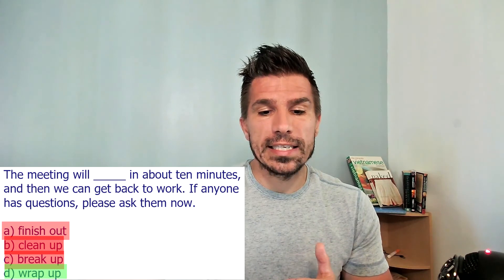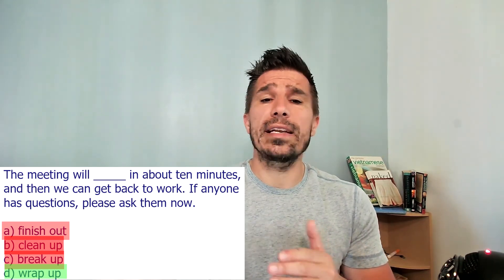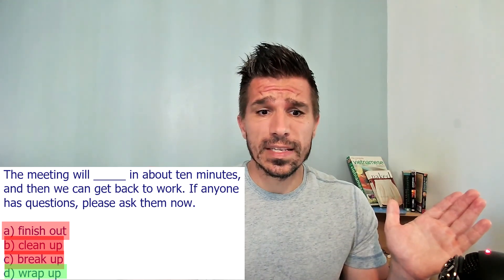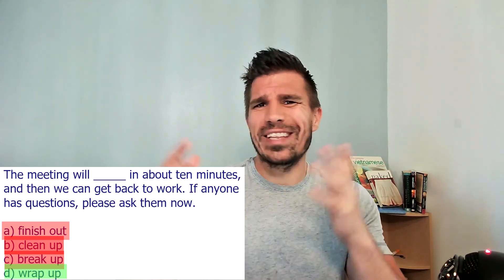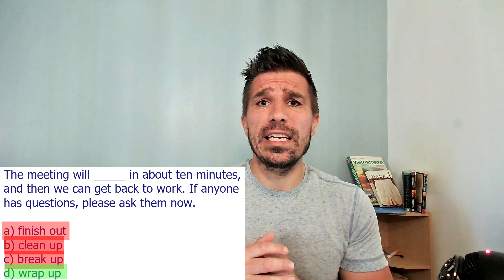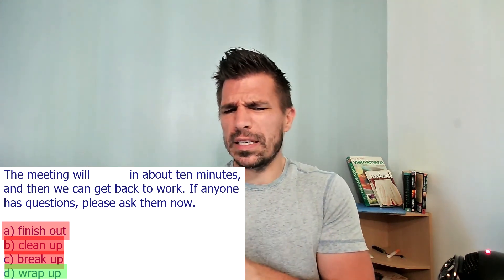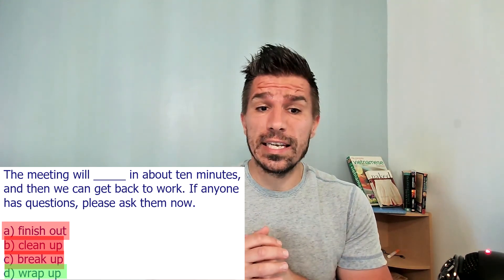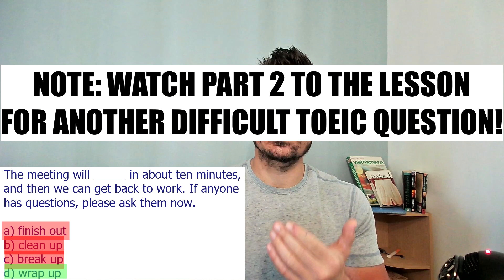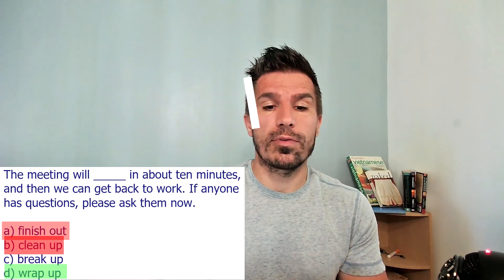So to summarize: A — FINISH OUT doesn't mean anything; B — CLEAN UP doesn't make sense; C — BREAK UP doesn't fit because the meeting isn't a couple and it's not breaking into groups. The best answer is D: WRAP UP, which means FINISH. That's the first difficult TOEIC question.